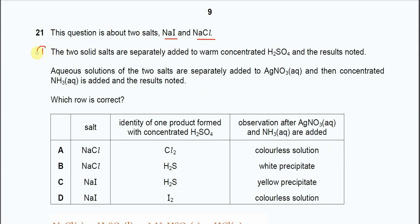First reaction is the two salts are separately warmed with concentrated H2SO4 and the results noted. Second reaction, aqueous solution of the two salts are separately added to silver nitrate solution followed by concentrated ammonia solution and the results noted. There will be two observations there.